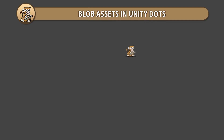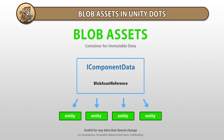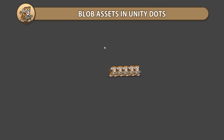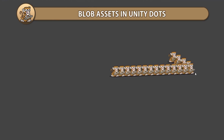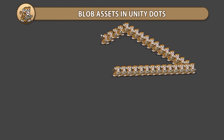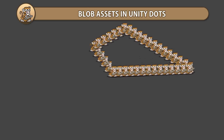In this video we're going to look at blob assets in Unity DOTS. We're going to learn what they are, how to create and how to use them. This is what Unity uses internally to handle DOTS animation data, physics shape data and more. Let's begin!